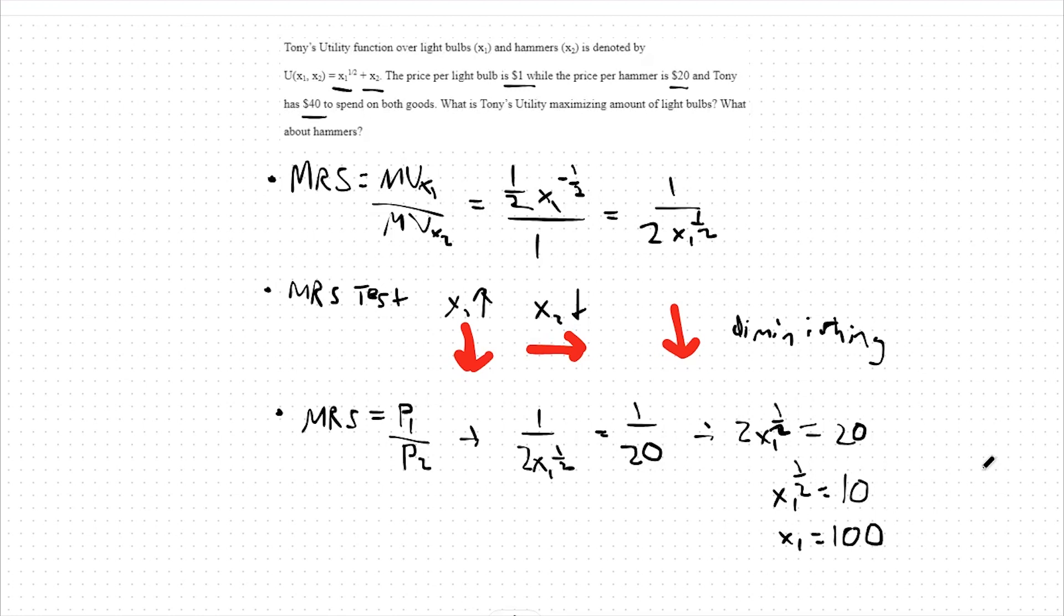So far, this should look no different than the last problem we were solving, where we took our MRS test and we found a diminishing marginal rate of substitution. However, when we try to solve for x2, something strange is going to happen. Let's take a look.